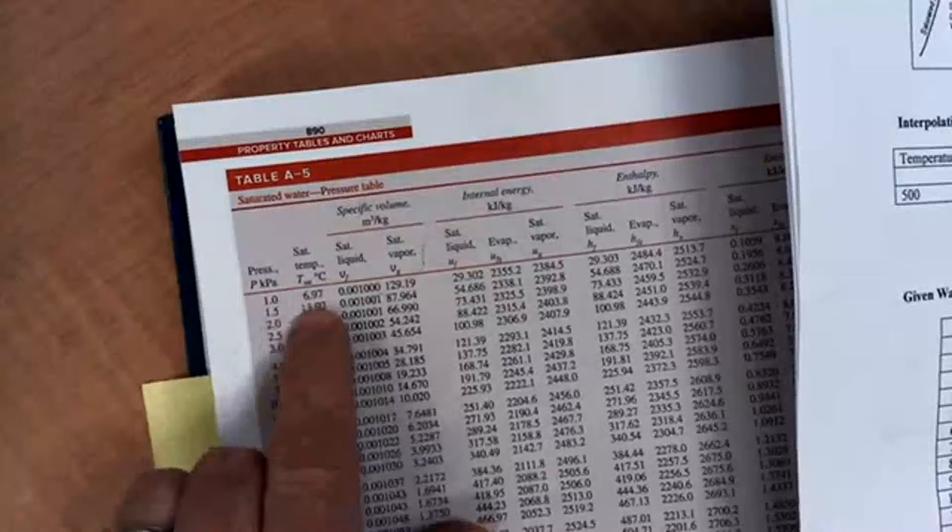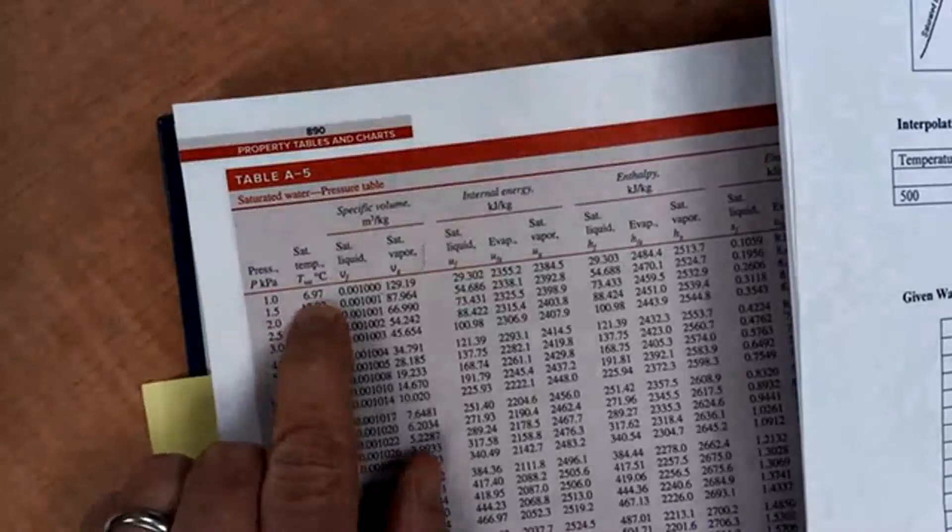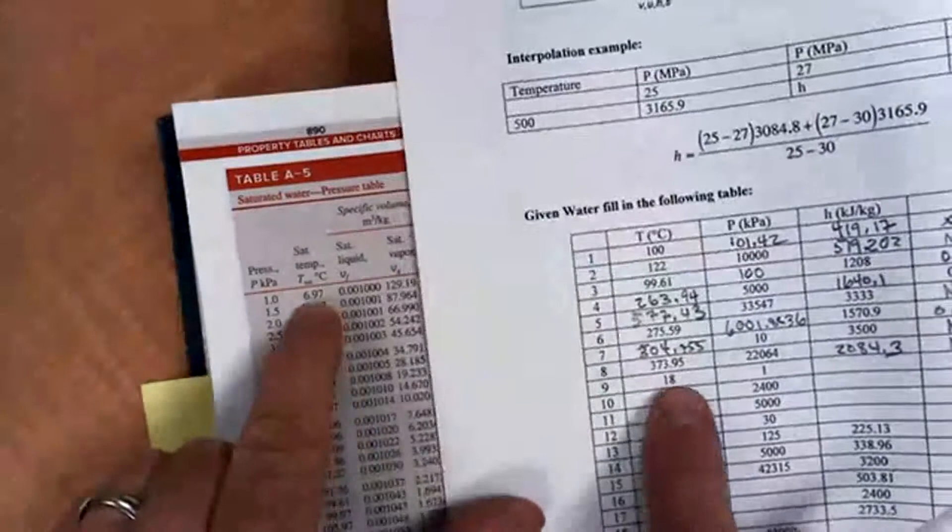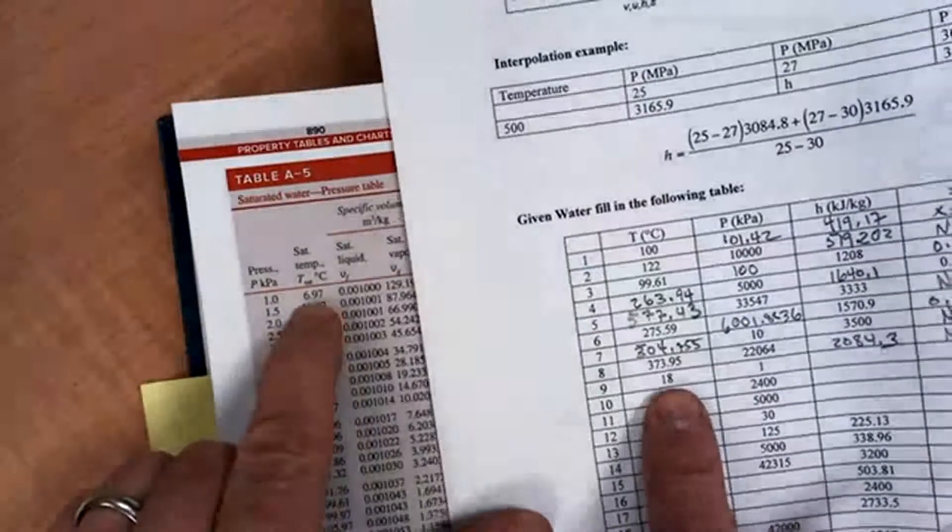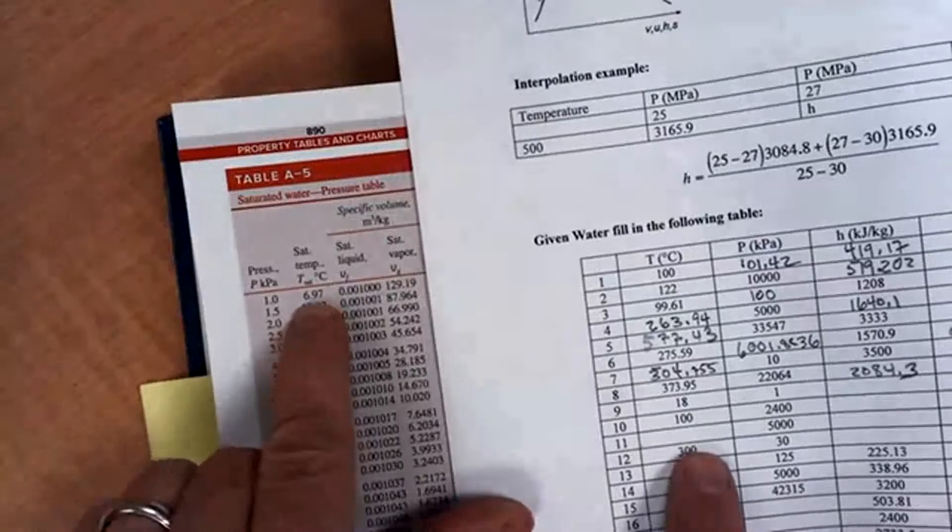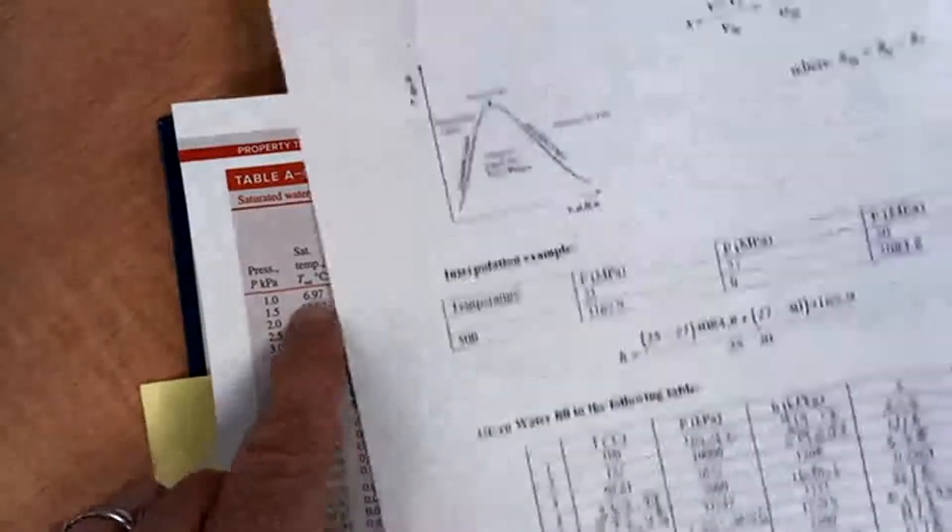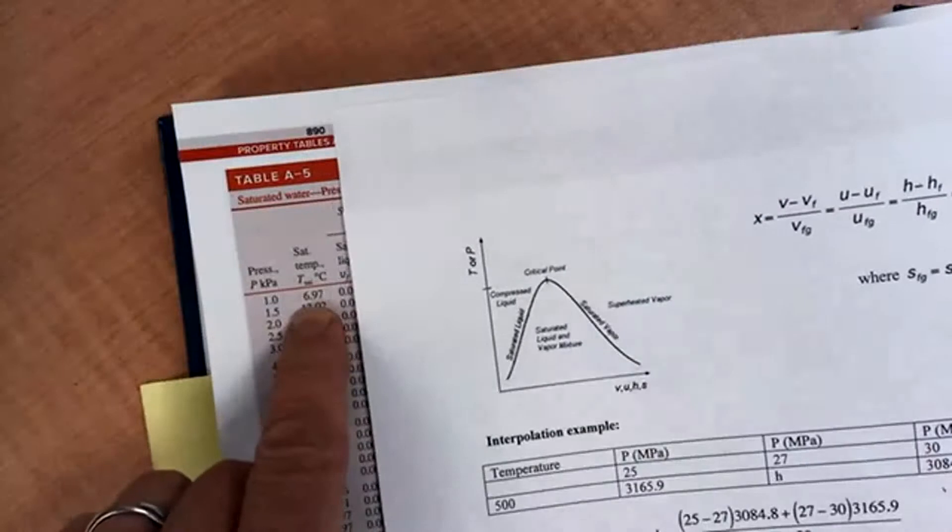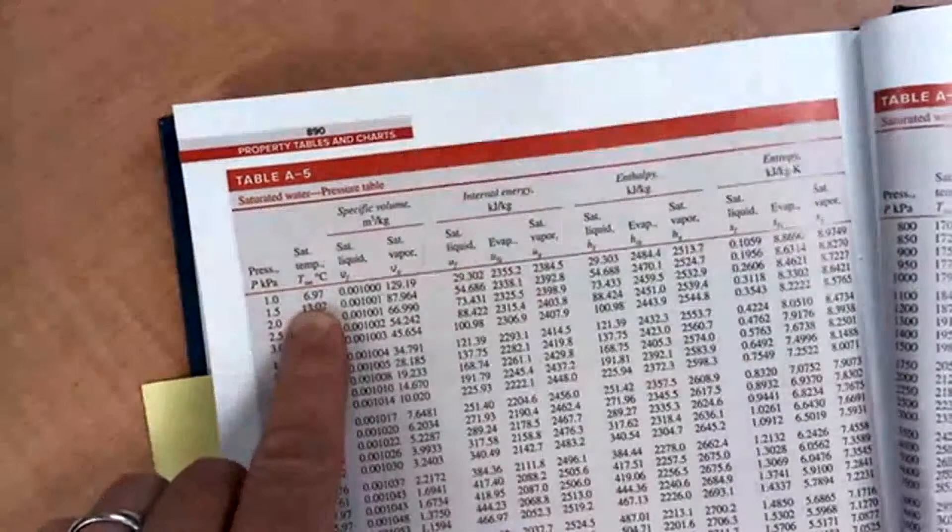It says that the saturation temperature should be or is 6.97. Given that we are at a higher temperature, we're at 18 degrees Celsius, then we must not be under the dome. We must be hotter than the dome, so it must mean that we're up here in the superheated vapor region.